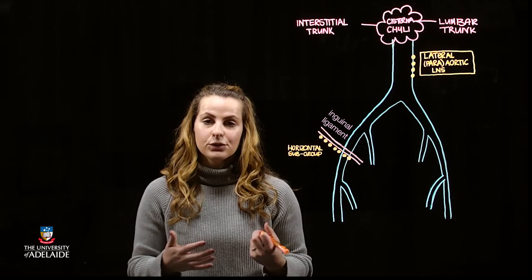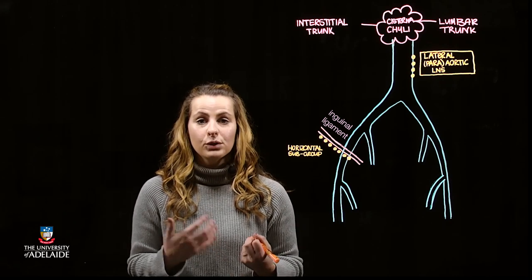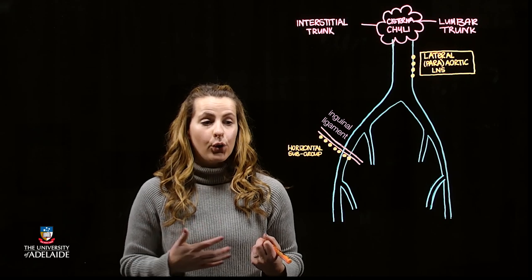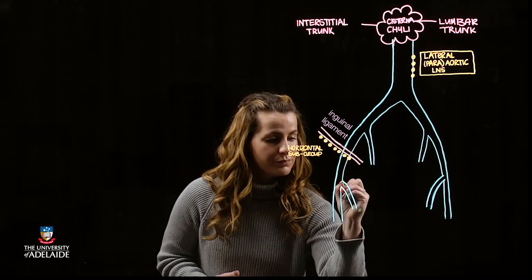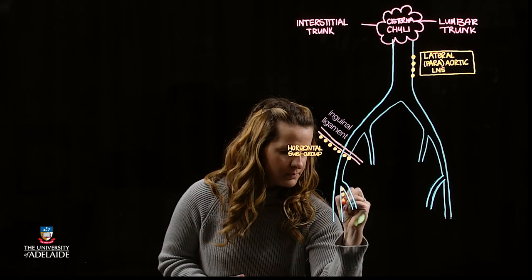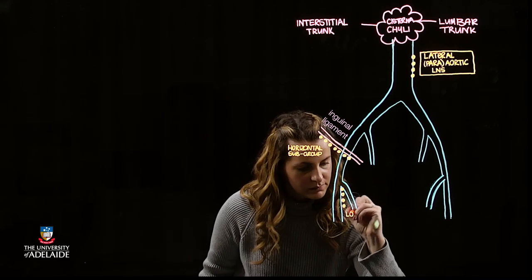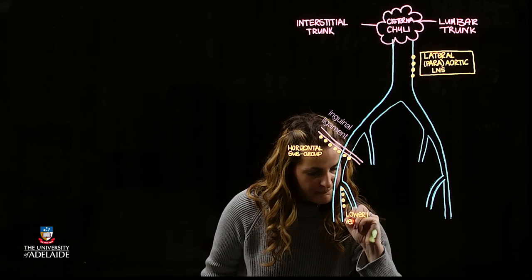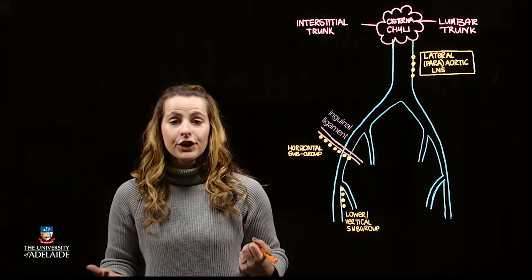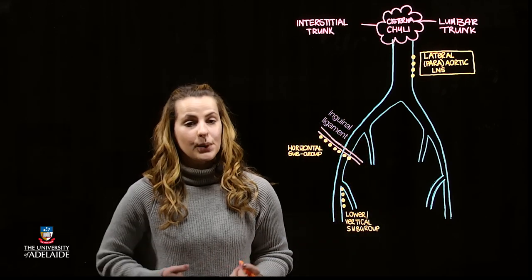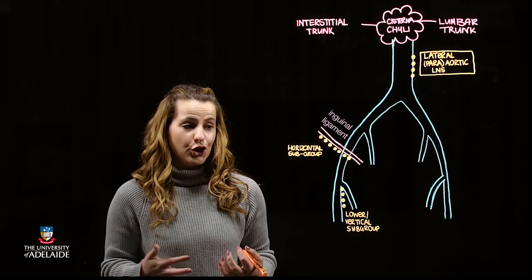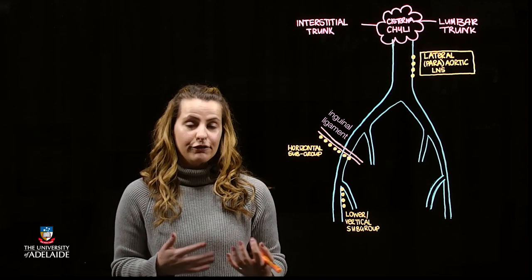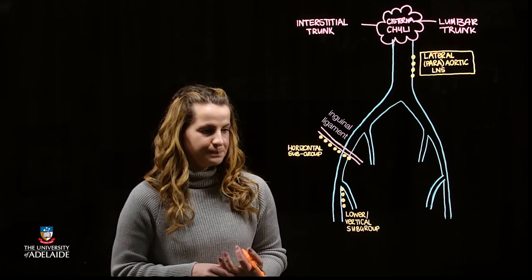Following this, we also have what's called the vertical, or lower, subgroup. The vertical subgroup is going to be located at the termination of the great saphenous vein at the femoral triangle.